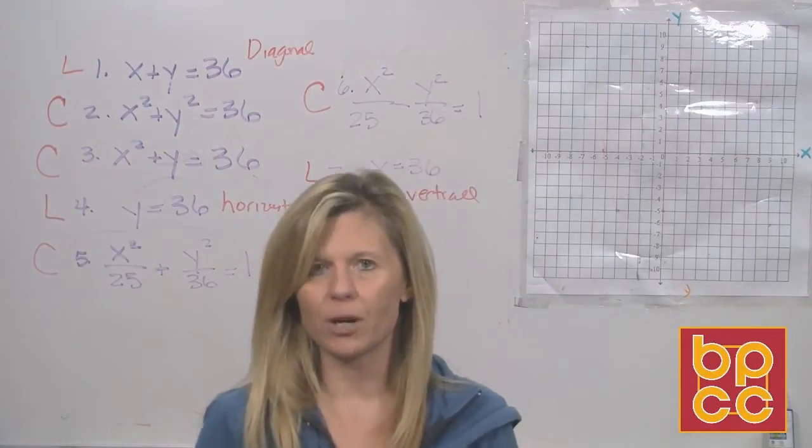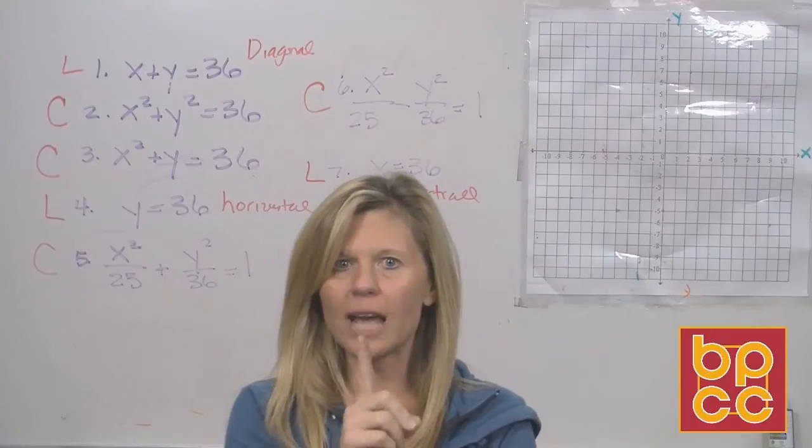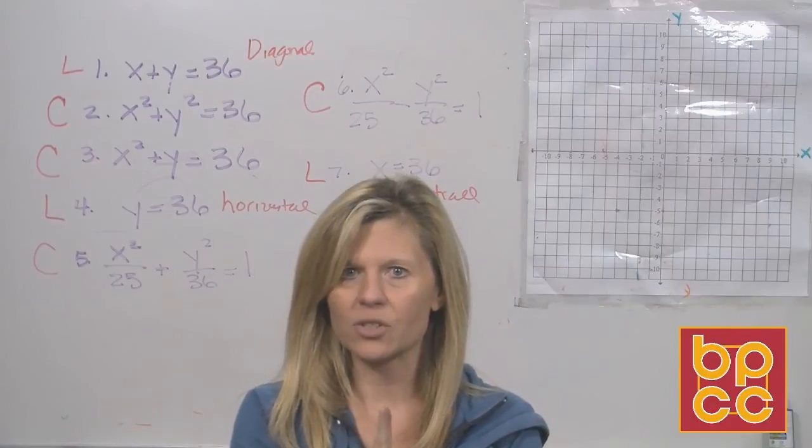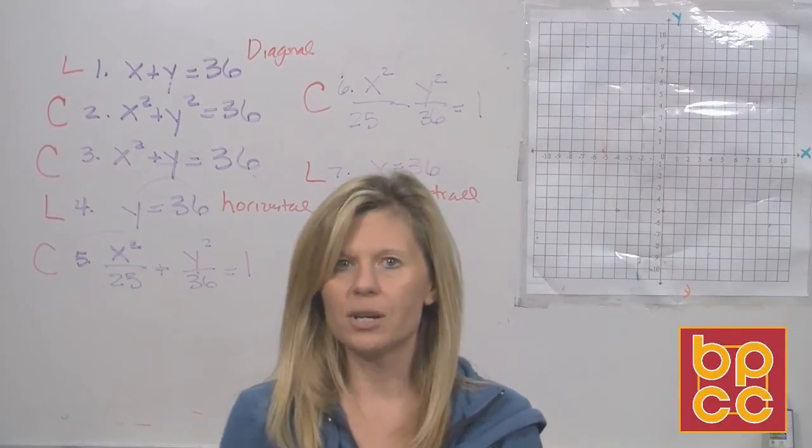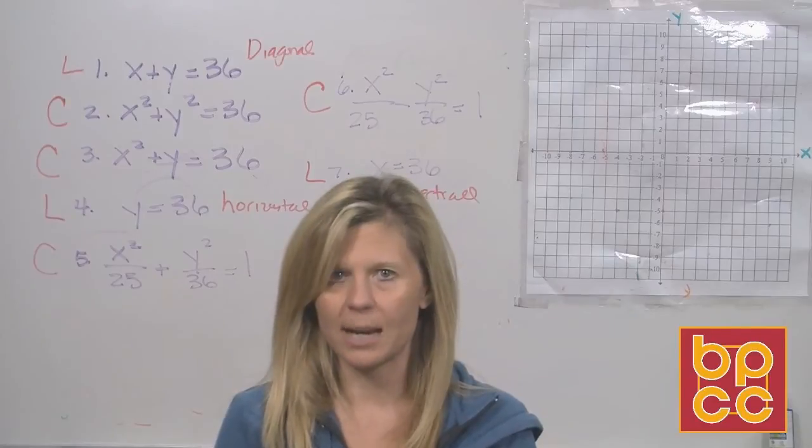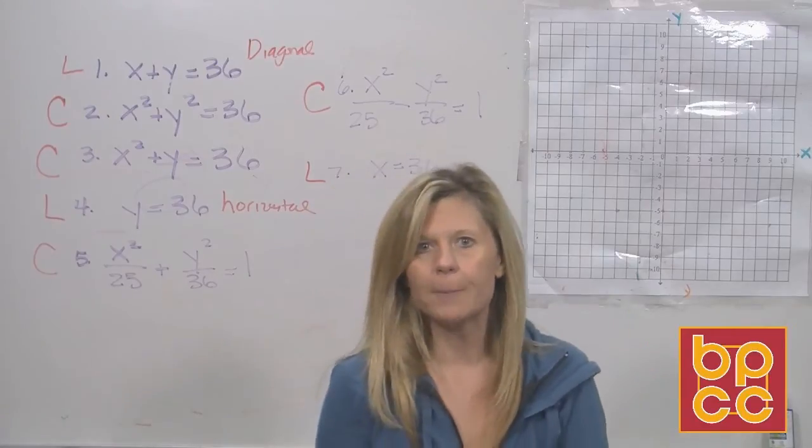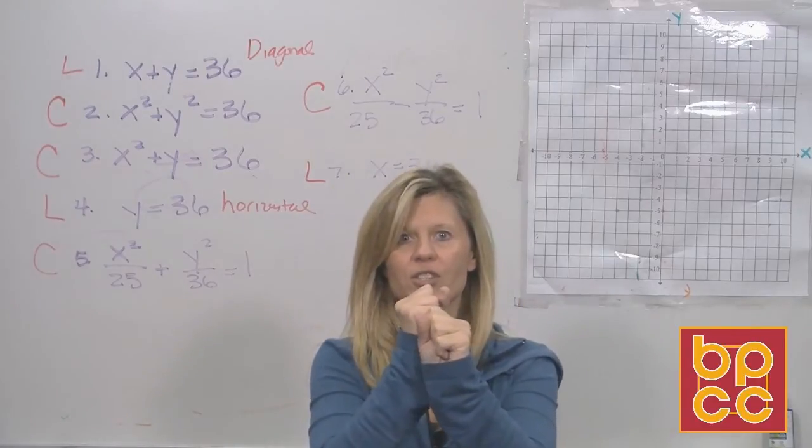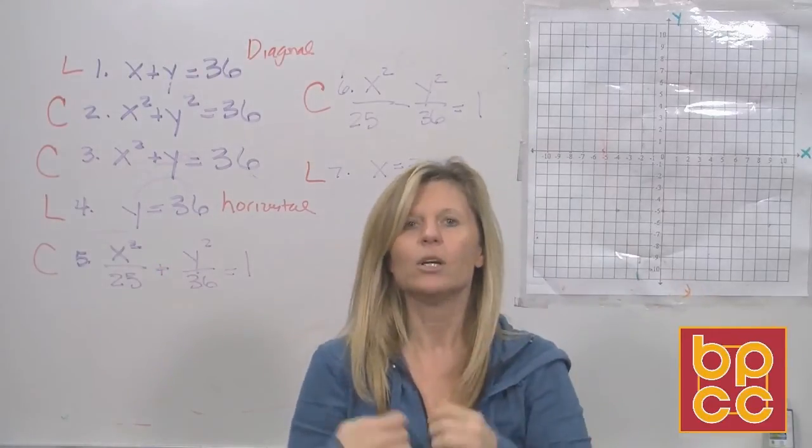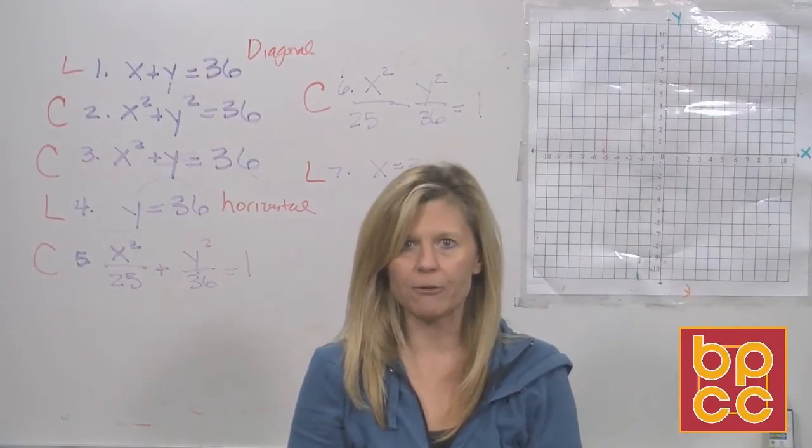An ellipse is also two curves that come together. You got to have an X squared. You got to have a Y squared. Coming together with a plus. What makes them different is a circle only has one distance to move, a radius. Therefore, the denominators in fractions would be the same number. An ellipse has to move two different distances. A across, B up and down. So the denominators would be different.